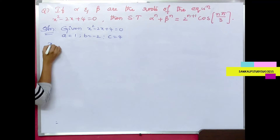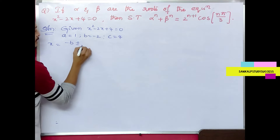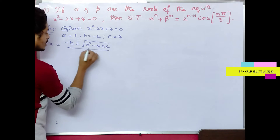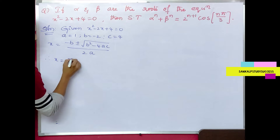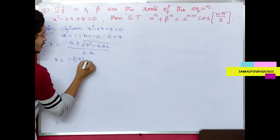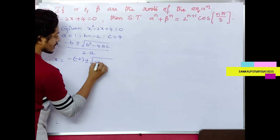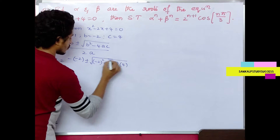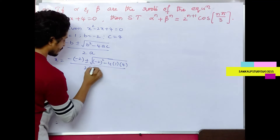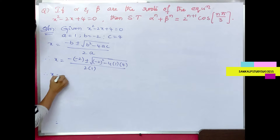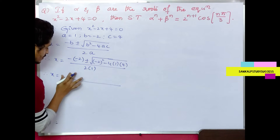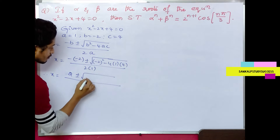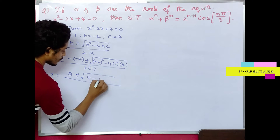Applying the formula: x = (-b ± √(b² - 4ac)) / 2a. Substituting: x = (2 ± √((-2)² - 4·1·4)) / (2·1). So x = (2 ± √(4 - 16)) / 2.